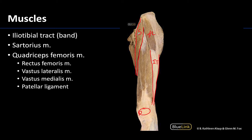The sartorius looks like a long ribbon running superficially over the muscles of the anterior compartment. It extends from the ASIS all the way to the medial tibia, so even though we can only see a bit of it here, it will extend all the way down. Sartorius is more superficially placed in this compartment. Deep to it you can see three of the four parts of the quadriceps femoris muscle, which is the dominant muscle of the anterior compartment of the thigh.